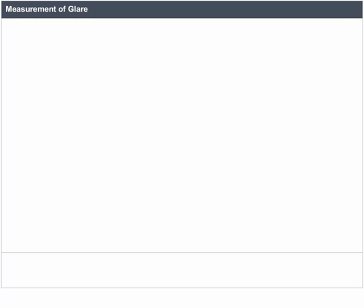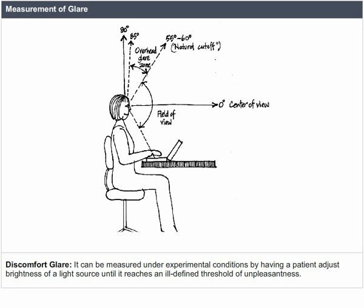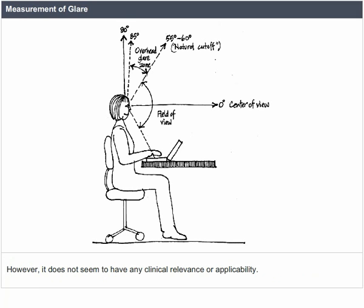Measurement of glare — discomfort glare: it can be measured under experimental conditions by having a patient adjust the brightness of a light source until it reaches an ill-defined threshold of unpleasantness. However, it does not seem to have any clinical relevance or applicability.